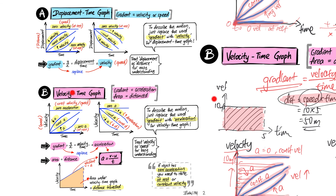For the velocity-time or speed-time graph, there are two things to remember: the gradient represents acceleration, because it's change in velocity over time; and the area underneath the graph represents the distance traveled by the car. So for this graph, note both the gradient and the area underneath.